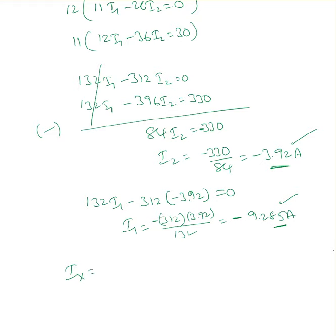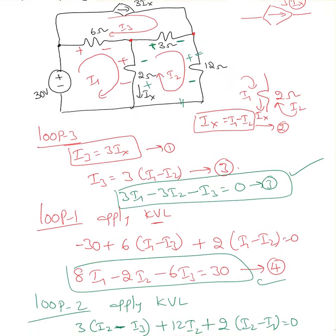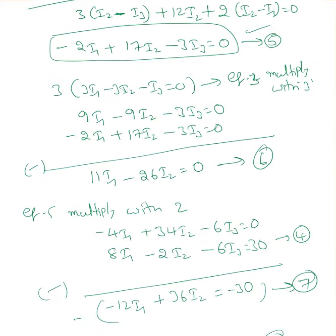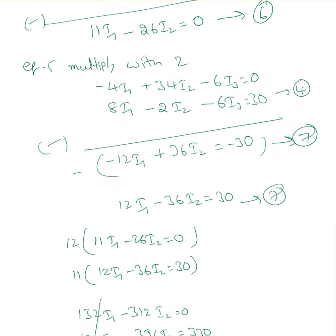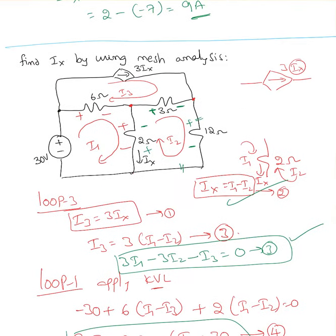Our goal is finding Ix. Looking at the circuit, Ix flows through the two-ohm resistor with I1 going down and I2 going up, so Ix equals I1 minus I2. With I1 equal to minus 9.285 and I2 equal to minus 3.92: Ix equals minus 9.285 minus (minus 3.92) equals minus 5.36 amperes. That's the Ix value. Sometimes it's easier to solve by mesh, sometimes by nodal analysis. I'll solve more examples in the next video.